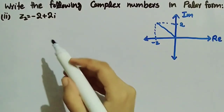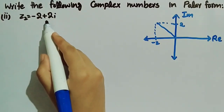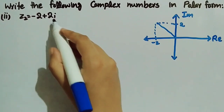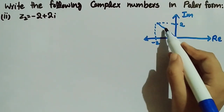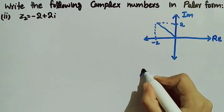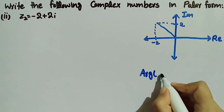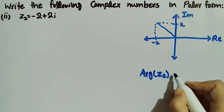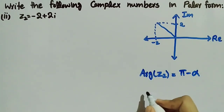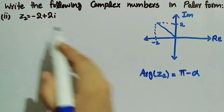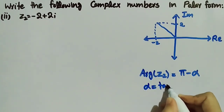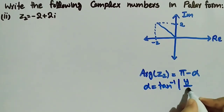The second example: the complex number is z2 equal to minus 2 plus 2 iota. In this example the real part is minus 2 and the imaginary part is 2, and we can see that the complex number is in the second quadrant. When the complex number is in the second quadrant, the argument of z2 is equal to pi minus alpha, where alpha is the angle that the complex number makes with the positive real axis, equal to tangent inverse of y over x.